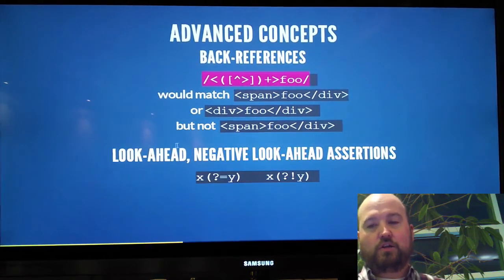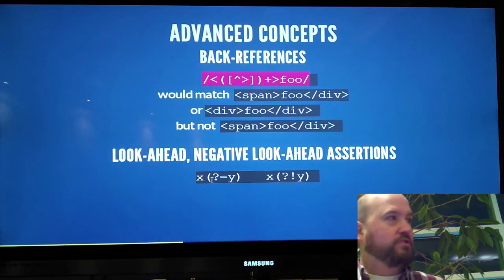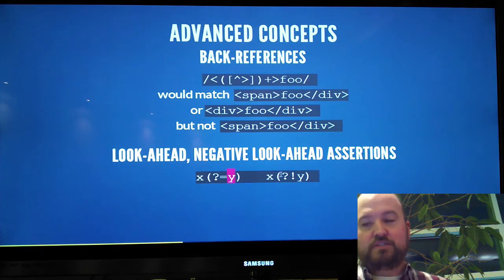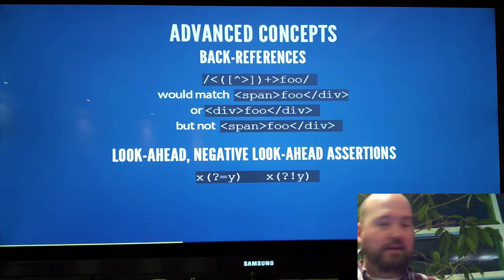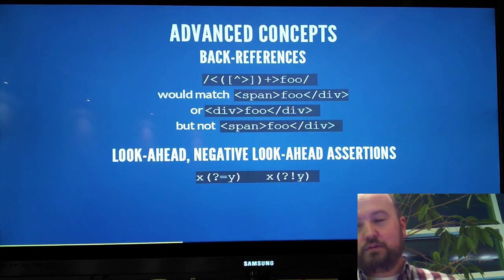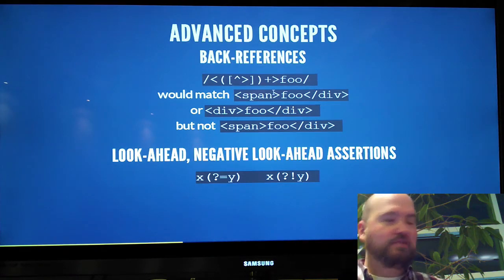There's a look ahead. So, like a zero capture look ahead. Say, an X followed by a Y, but don't capture it. Or an X that's followed by something that's not the letter Y. But again, don't capture. There's look behind assertions in Perl. Yeah, I'd say you probably want to wrap your head around some of the basics, character classes, and so on before you tackle those.